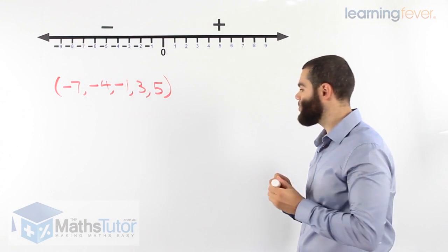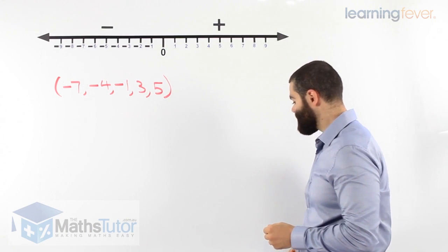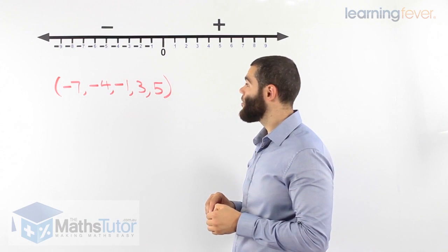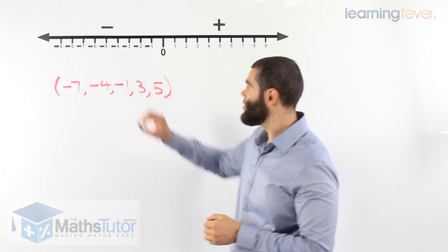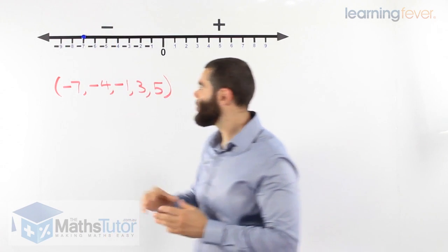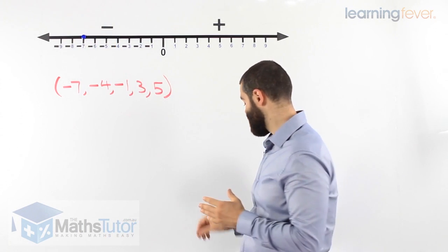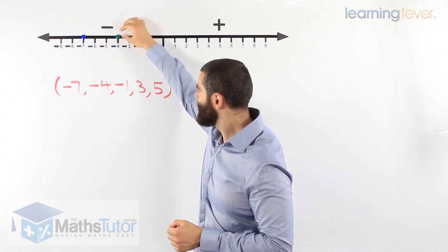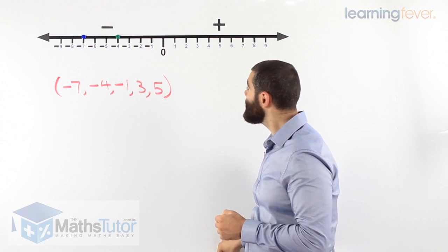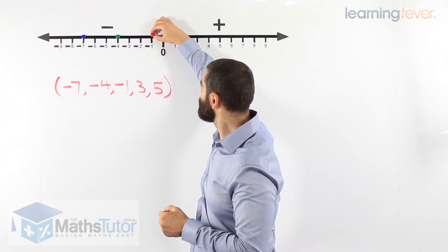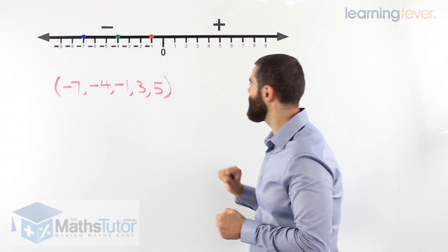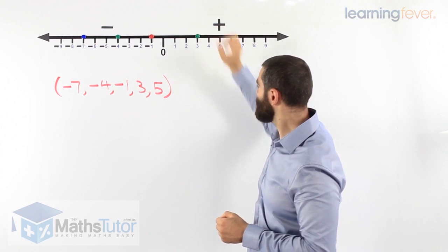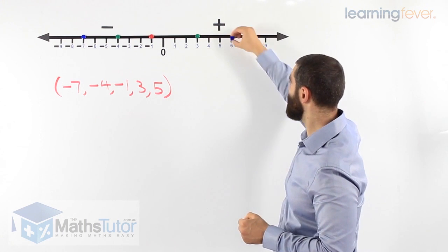So to plot these numbers on a number line, we simply place a dot, a big dot, on the number line. Here, we have negative seven, we plot the point by putting a dot on the negative seven. On the negative four, there we go. On the negative one, there we go. On the three, and on the five.